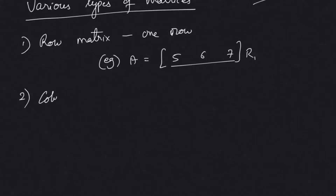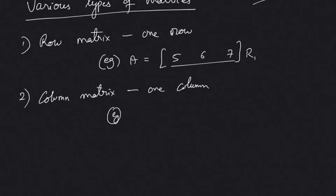The second matrix is the column matrix. Similarly, the column matrix is a matrix which has only one column. For another example, matrix 1, 2, 3 — we can see that this also has only one column.